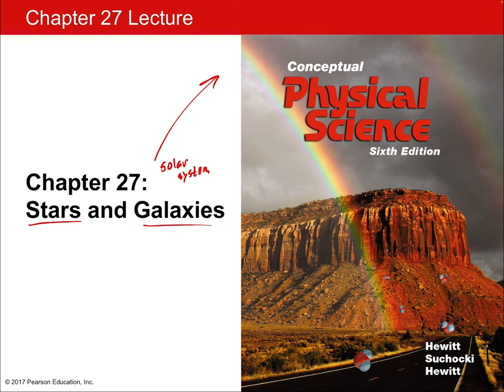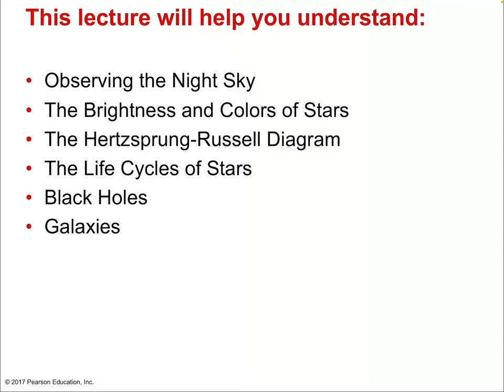How do we classify stars? What is the life cycle of stars? How do stars differ? Dramatically is the answer. And then how are stars grouped together in giant clouds or spiral structures called galaxies? Some interesting facts about galaxies themselves will set us up for Chapter 28, when we'll talk about where the universe came from. Let's talk about stars and galaxies.